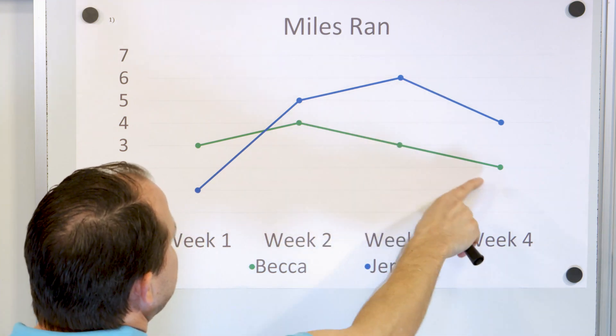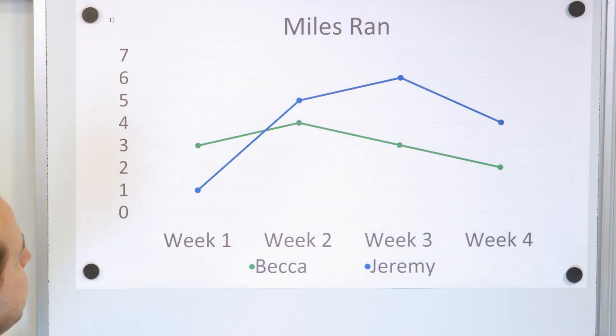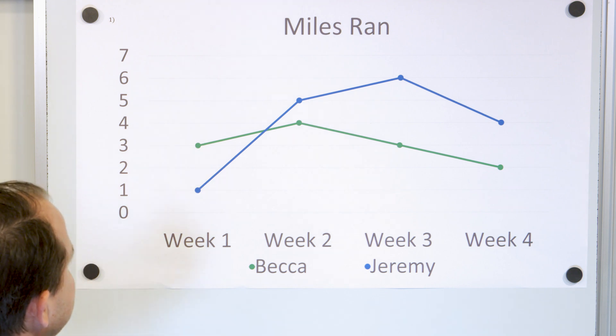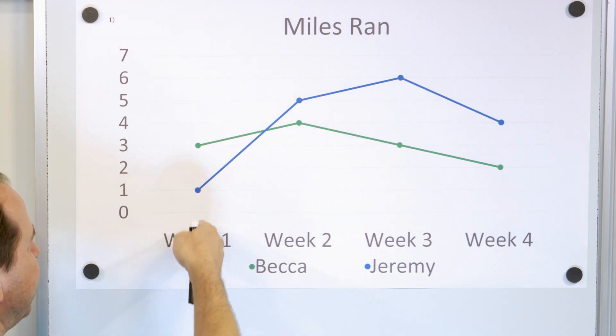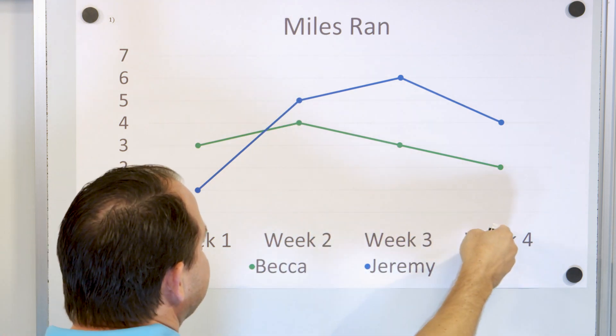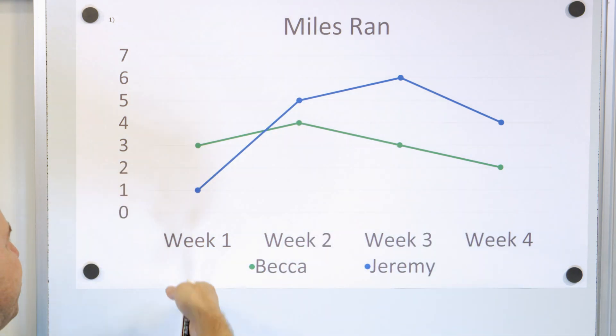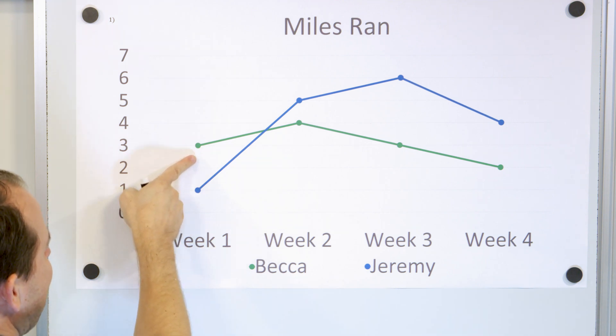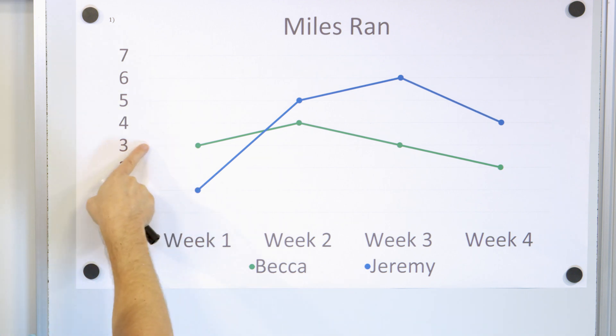So you have one in blue and then one in green. And of course they're connected. The way you read this is you can say, on week one, we have these data points. And on week two, we have these data points in week three and week four. And of course they're connected. So if you just isolate yourself to week one, you can see the green graph is Becca's amount of miles. She ran on week one, three miles.